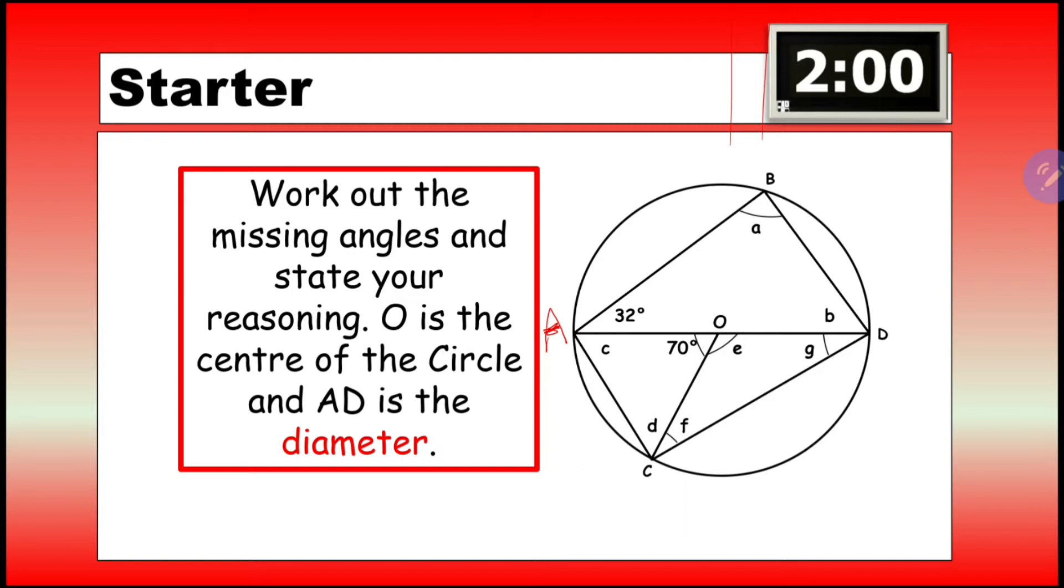Work out the missing angles and state your reasoning. O is the center of the circle, which is right there, and AD is the diameter. So A is there and D is there.